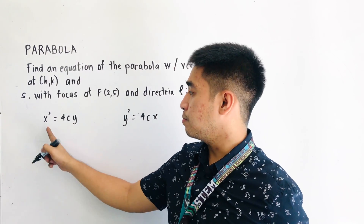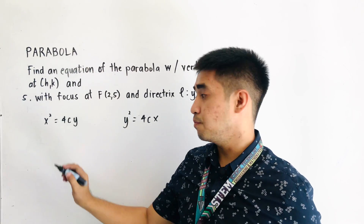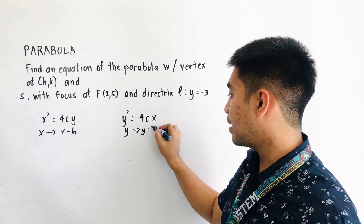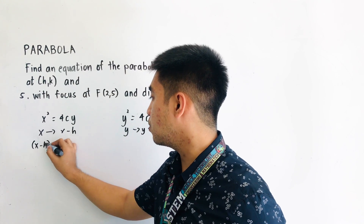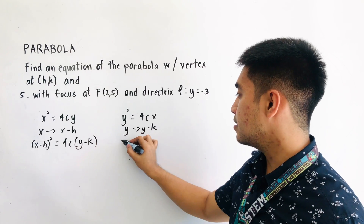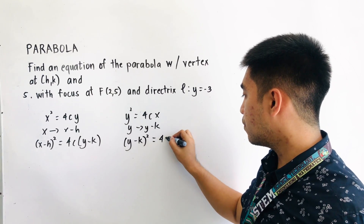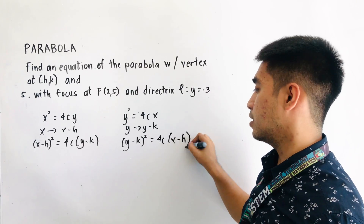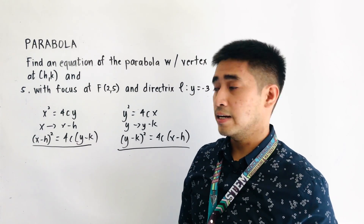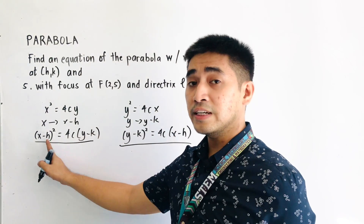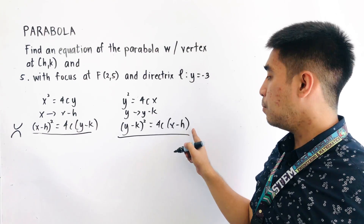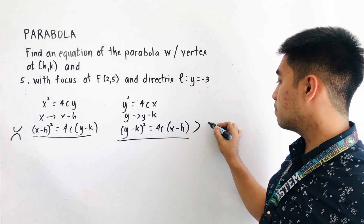Remember, we will be using the equation from Theorem 1 and Theorem 2, but we will be replacing x by (x minus h), and we will be replacing y by (y minus k). So this becomes (x minus h) quantity squared is equal to 4c times (y minus k). And from Theorem 2, this becomes (y minus k) quantity squared is equal to 4c times (x minus h). This is now the equation of the parabola with vertex located at (h, k). The first equation opens upward or downward; the second equation opens to the left or to the right.